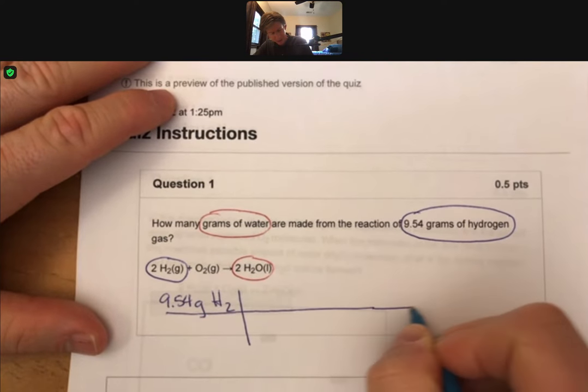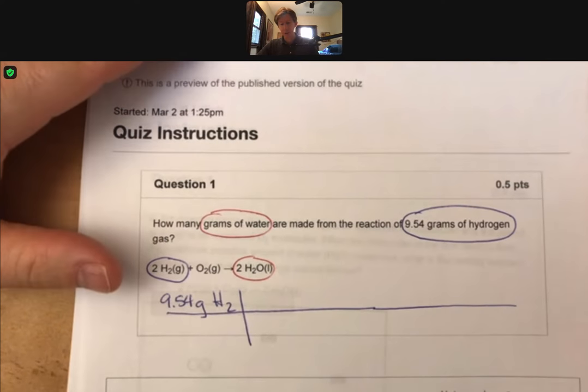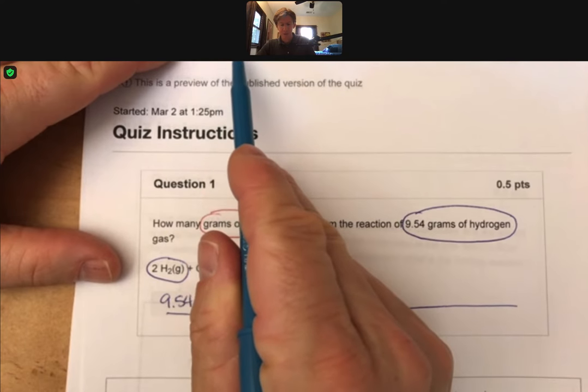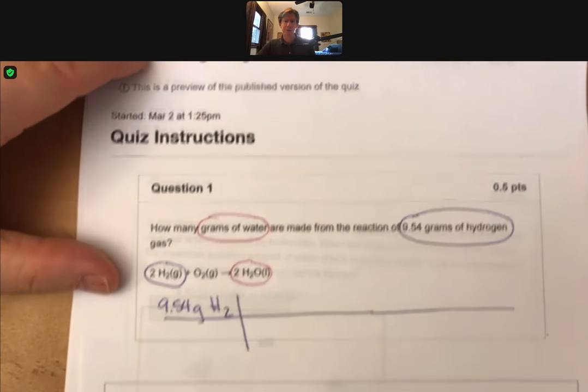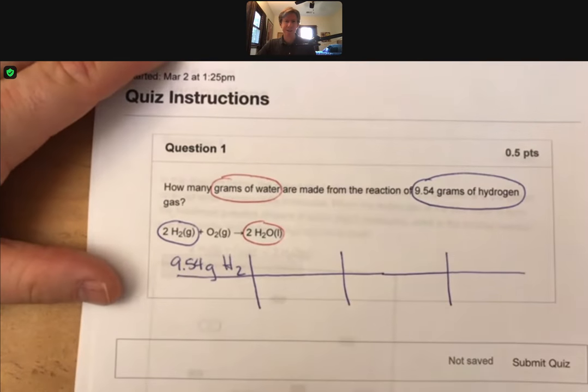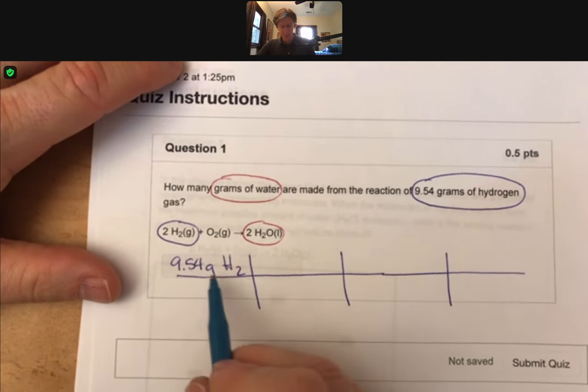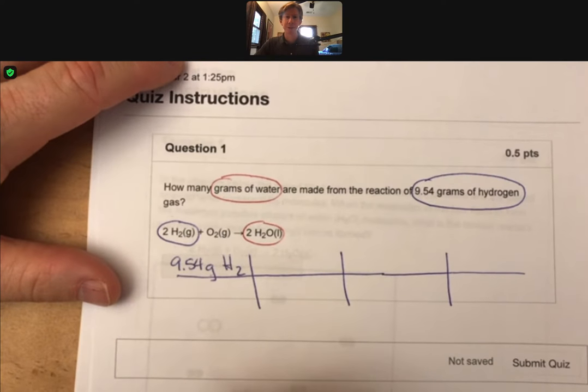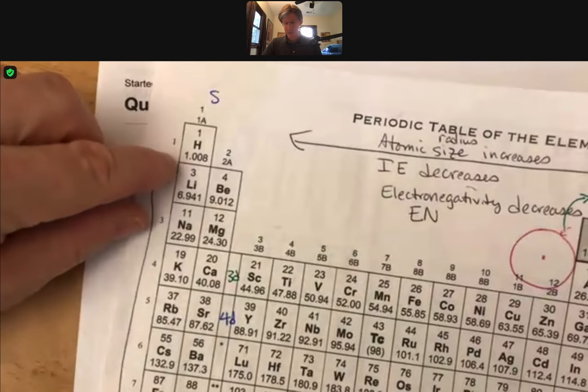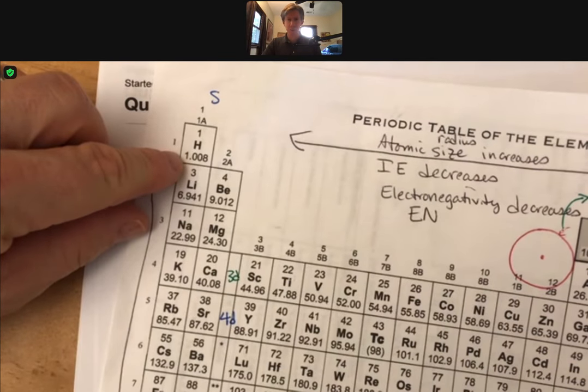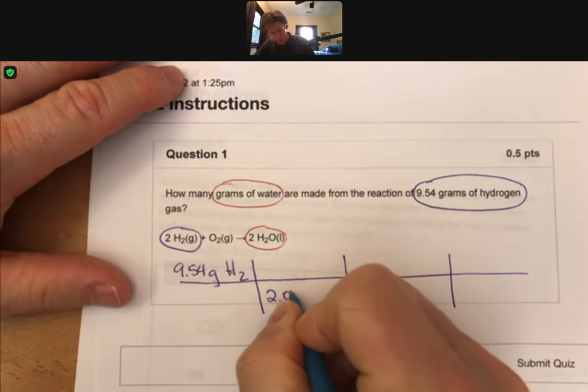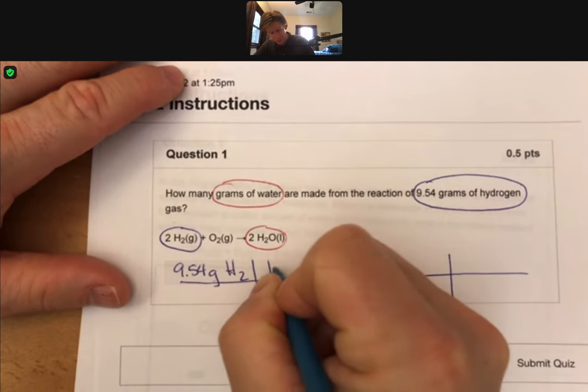And this is going to be a nice long picket fence because we're going to have three unit conversions from grams to moles, moles to moles of something else, and then moles to grams. So, something like this. Any time you're given grams of something, turn it into moles. Of course, we've got our handy periodic table. We have 2 times 1.008. That's going to be 2.016 grams of hydrogen for every one mole.